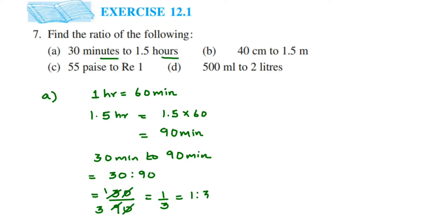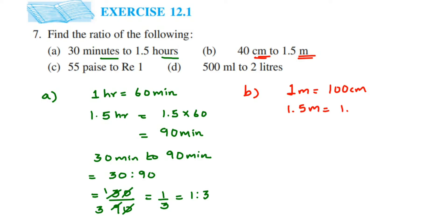Now the second question. We have 40 centimeters to 1.5 meters — one is in meters and one is in centimeters. Again, both should be in the same unit. I am going to convert meters to centimeters. We know that 1 meter is equal to 100 centimeters. So 1.5 meters will be equal to 1.5 multiplied by 100 centimeters. We are converting from a higher unit to a smaller unit, so we multiply. When you multiply, you get 150 centimeters.